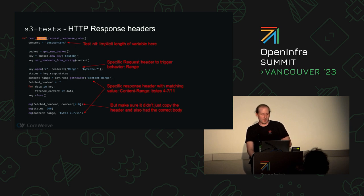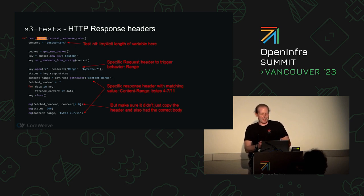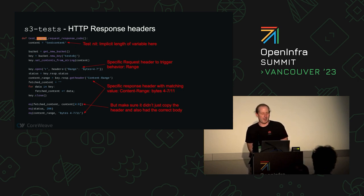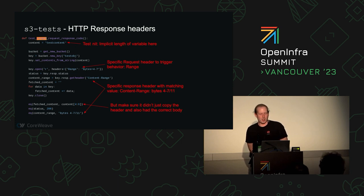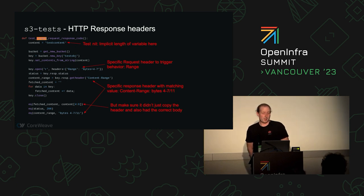This also means sometimes testing what the response says. There's a bug I found while writing this presentation: this test has a piece of implicit information — the length of content happens to be 11 bytes, but we just wrote it in; we didn't actually measure it. This test would break if we changed something. And if we do send range bytes four through seven, we should make sure that the response content-range header mirrors that part of it.